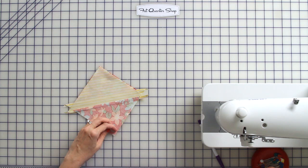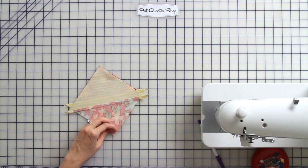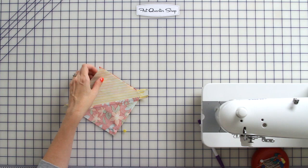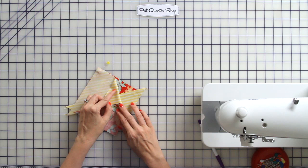You're going to pin in place, just pin once will be fine, on each side. And then you'll notice when you flip this up your seams don't nest and that's the way it should be.